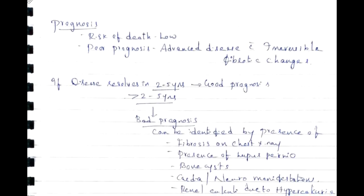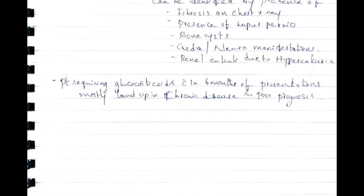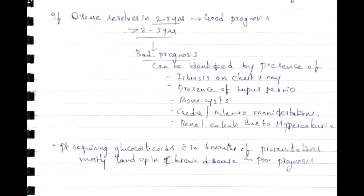Prognosis: risk of death is low — only 5%. Poor prognosis is indicated by advanced disease with irreversible fibrotic changes, or disease lasting more than two to five years with ongoing symptoms. Bad prognosis can be identified early when the patient presents with fibrosis on chest X-ray, lupus pernio, bone cysts, cardiac or neuro manifestations, renal calculi due to hypercalciuria, or requiring glucocorticoids within six months of presentation — these patients mostly progress to chronic disease.